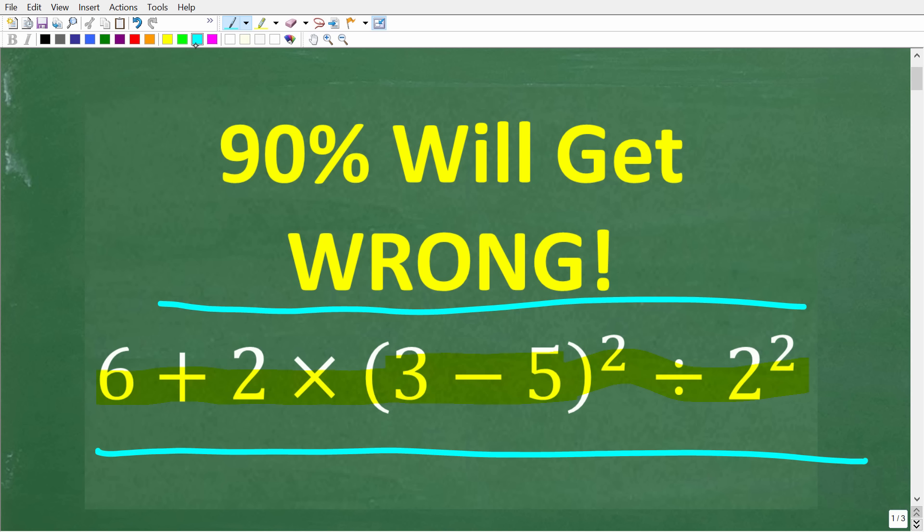So we have 6 plus 2 times 3 minus 5 in parentheses squared divided by 2 squared. Now, if you think you know the answer, put that into the comment section. I'm going to show you the complete solution steps here in just one second.